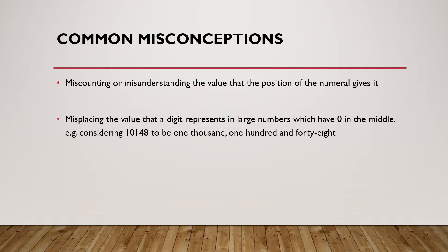The most common misconceptions — where people lose the most marks in this particular topic — are miscounting or misunderstanding the value that the position of the number gives it. For example, in 123, that 1 is 100. But if you thought that 1 was a 10, that would be misrepresenting the value. And misplacing the value that the digit represents in large numbers which have a zero. For example, that number on the screen is 10,148, but I've seen people think that is 1,148, not understanding that the zero is there to show a lack of thousands.